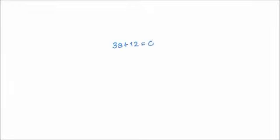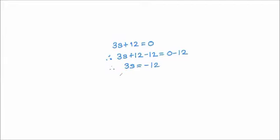Next: 3s + 12 = 0. We want to cancel +12 first, so subtract 12 from both sides: 3s = −12. Now divide both sides by 3. 12 ÷ 3 = 4, and since the signs are different the answer is negative. So s = −4.